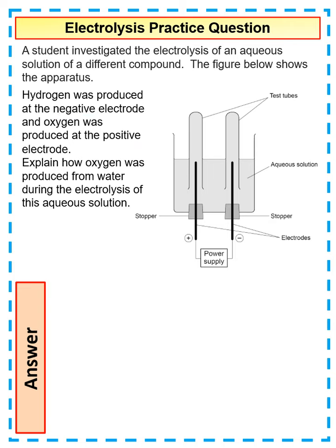So explain how oxygen was produced from the water during electrolysis of this aqueous solution. So we only really need to worry about the oxygen, nothing else. So the first thing that you'd talk about...